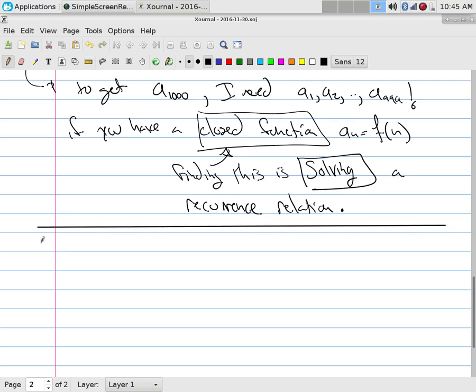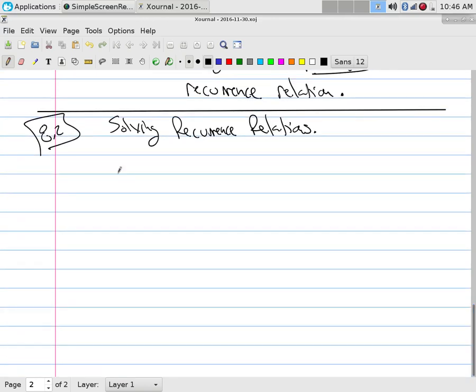That's what 8.2 is about. Section 8.2 is how do I go about solving recurrence relations. We already mentioned this before, this is just a repeat of things we've done before, but done with a little bit more advanced techniques.